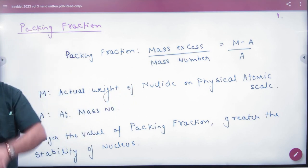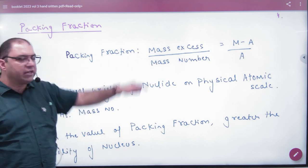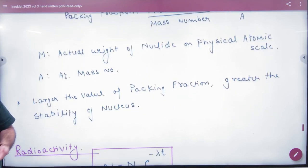...physical atomic scale, mass is M. And mass number is A, atomic mass number is A. So we divide the difference from A, and you will have packing fraction in one line, in objective form.